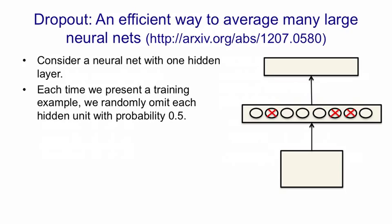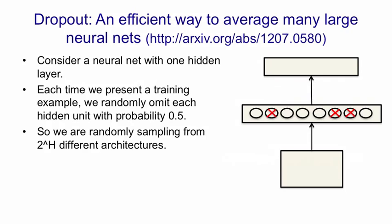What this means is we're randomly sampling from 2 to the H architectures, where H is the number of hidden units. It's a huge number of architectures. Of course, all of these architectures share weights. That is, whenever we use a hidden unit, it's got the same weights as it has in other architectures.